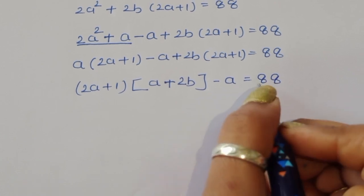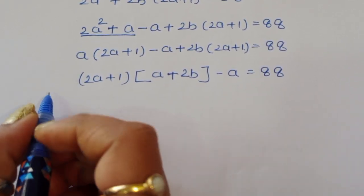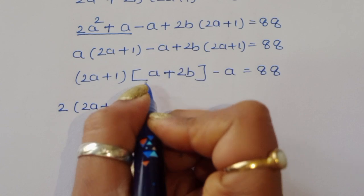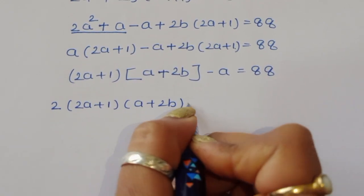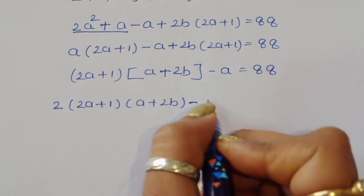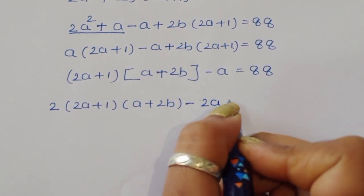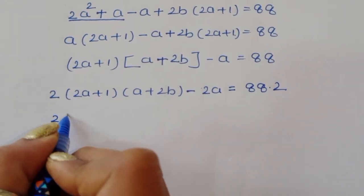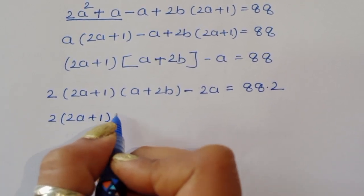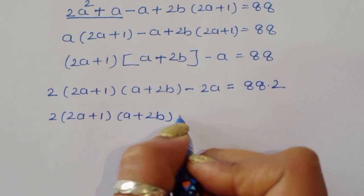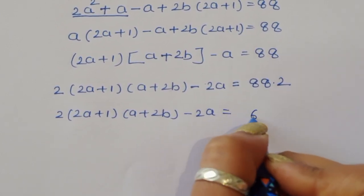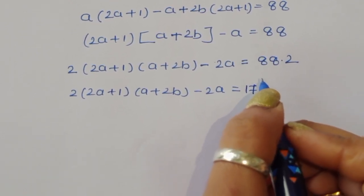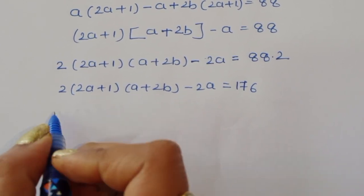We multiply again by 2 on both sides: 2(2a + 1)(a + 2b) minus 2a = 176.